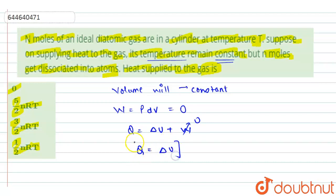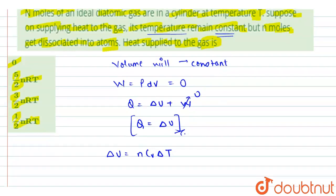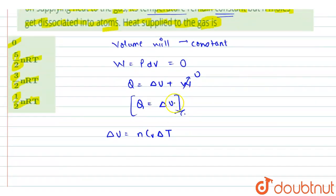So from here, now we know that further for constant volume, the ΔU is given as n Cv ΔT. So if we can find the change in internal energy, we can simply equate it to the heat supplied to the gas.